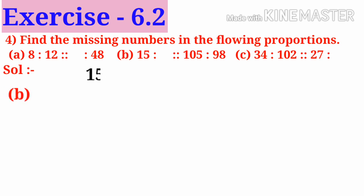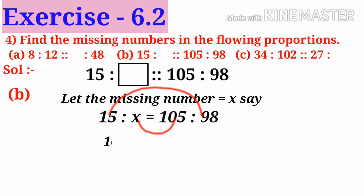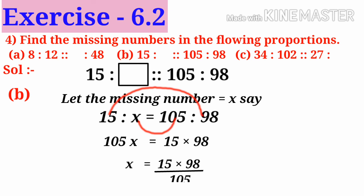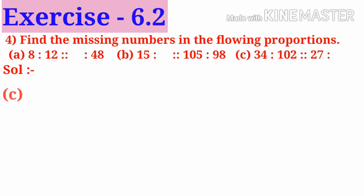Next B: 15 is to box is as 105 is to 98. Let the missing number be x. Now 15 is to x is equal to 105 is to 98. Both are in proportion, so product of means is equal to product of extremes. So 105 into x is equal to 15 into 98. x is equal to 15 into 98 divided by 105. On simplification: x equals 14. So the missing number is 14.